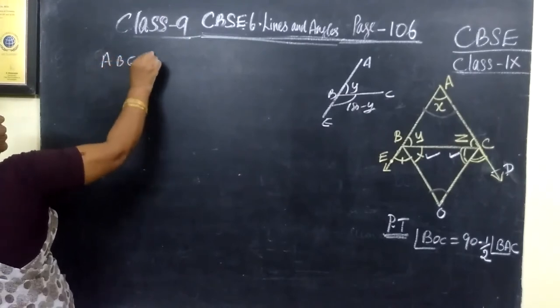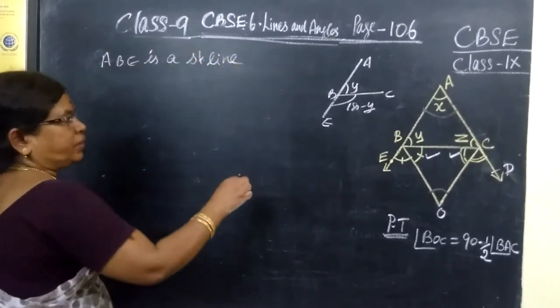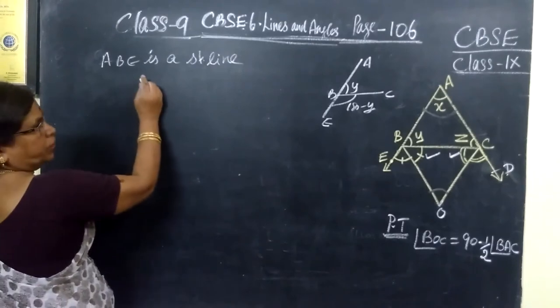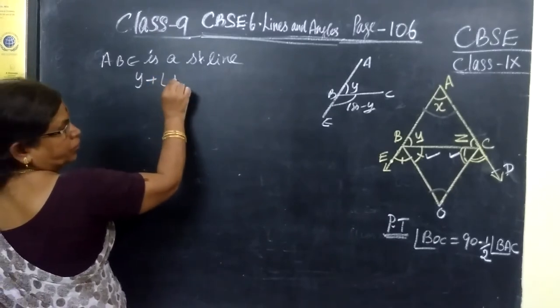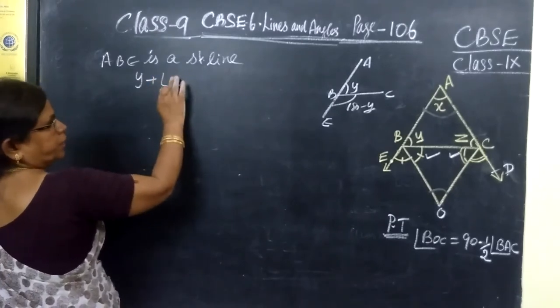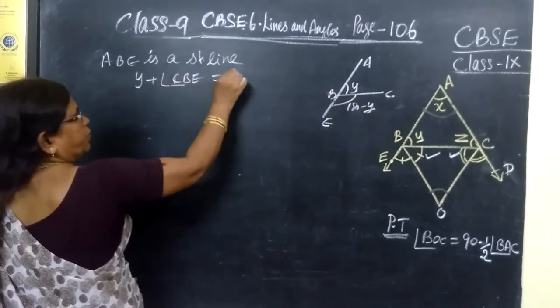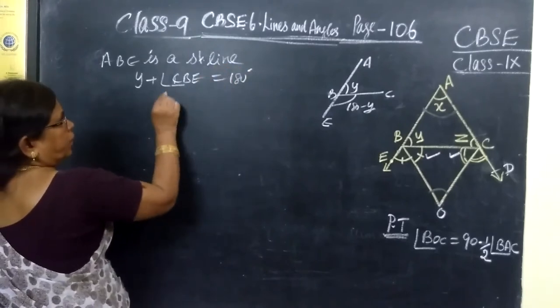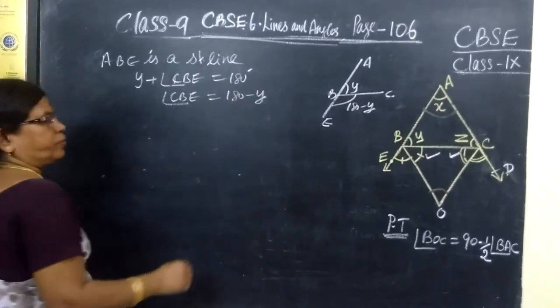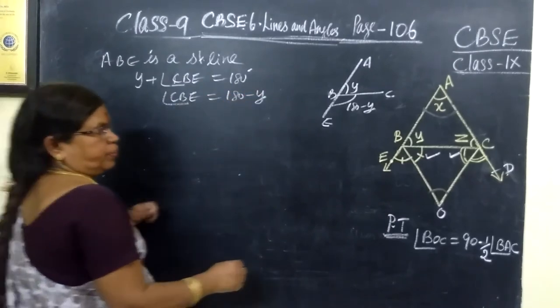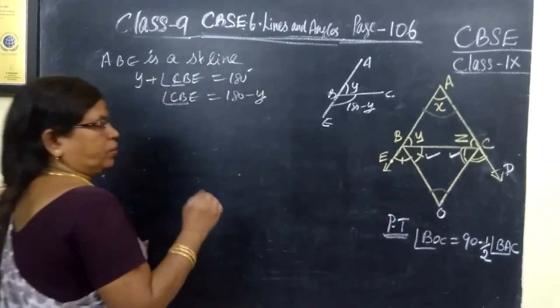ABC is a straight line. So just directly we write sum of the angle is 180 degree. Therefore Y plus angle CBE equal to 180 degree. Therefore CBE equal to 180 minus Y. So CBE equal to 180 minus Y.